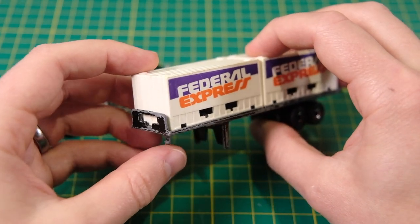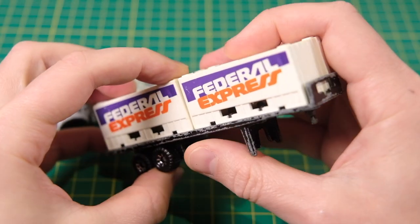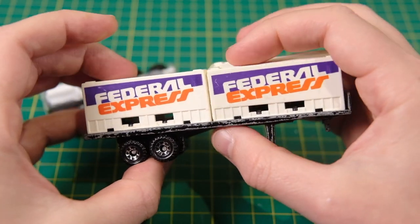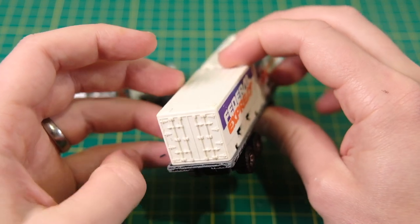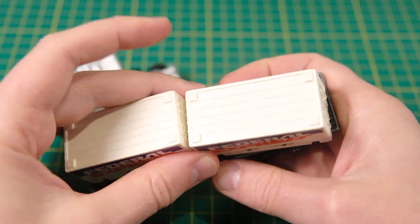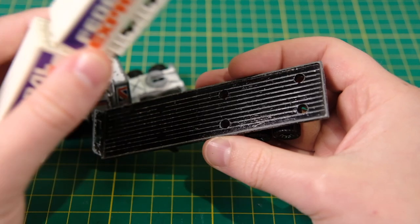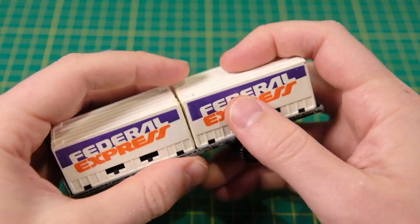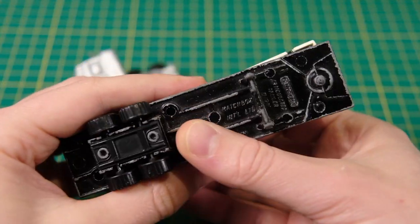Obviously you'll see what direction I ultimately took at the end of the video but stick around to come on this build journey with me. What I did want to try to do was to keep the Federal Express branding which quickly ruled out a full custom featuring modified containers.